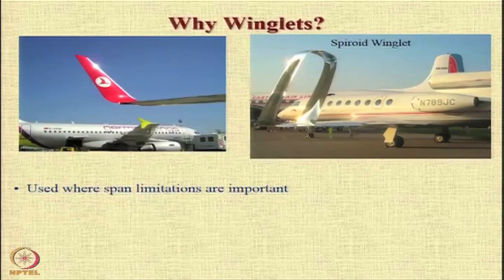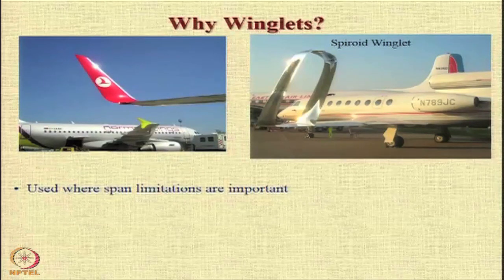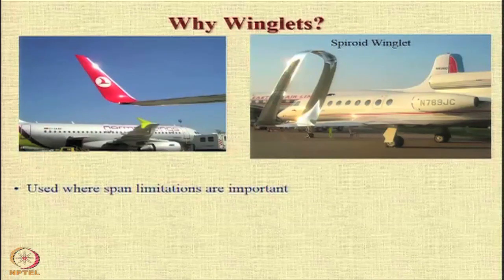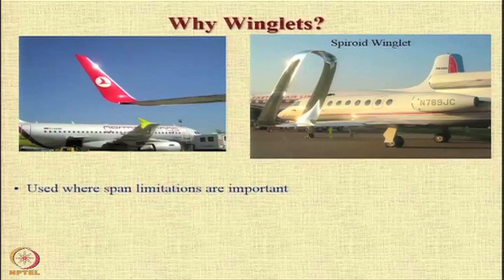Another interesting variation that you see are winglets. Winglets are essentially used to reduce the strength of the wing tip vortex and hence reduce the induced drag. In some cases, we also provide winglets where we have a limitation on the span.